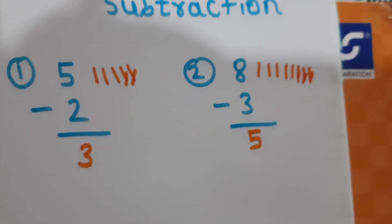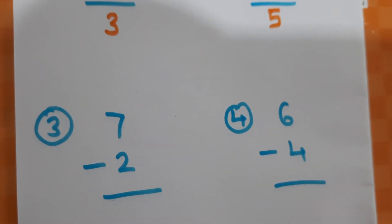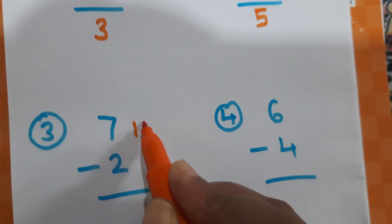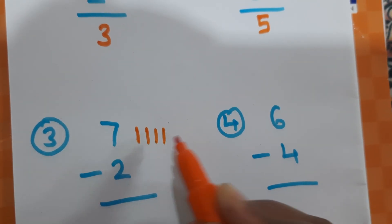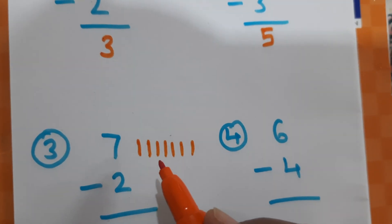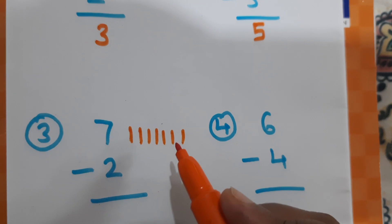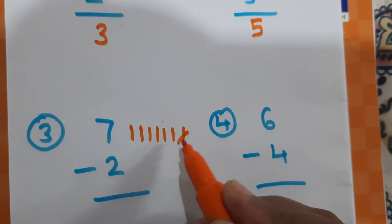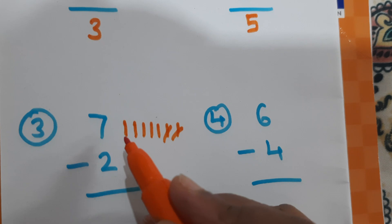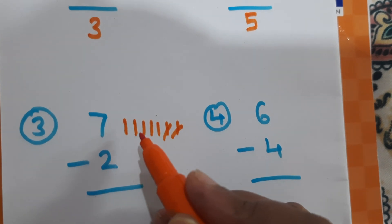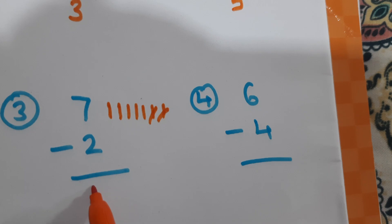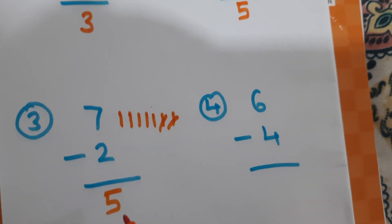Next example: 7 minus 2. We draw 7 lines: 1, 2, 3, 4, 5, 6, 7. Minus 2, so we cut 2 lines: 1, 2. 5 lines are remaining. So, answer is 5. 7 minus 2 is 5.